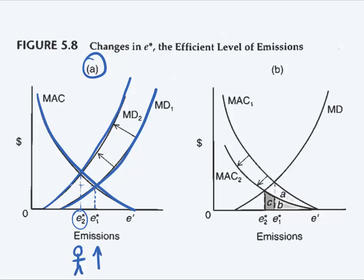Meaning the cost per emission has also increased from W1 to W2. So I see this change in marginal damages due to change in population, and this causes a change in the efficient level of emissions.